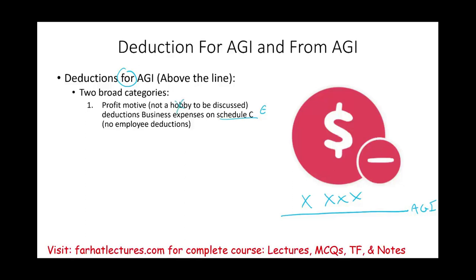Bear in mind, we have to have a profit motive — we cannot have a hobby, and we're going to discuss hobby in a separate session. As long as you have a legitimate Schedule C business, not a hobby, and you are incurring deductions — there are many deductions which we're going to see on Schedule C. Or if you have a rental property, Schedule E. Or if you are a partner in a partnership, you have Form 1065 or 1120S. Business deductions come for AGI, and I'm going to show you physically how they come above AGI.